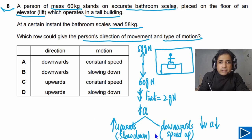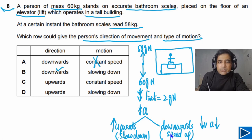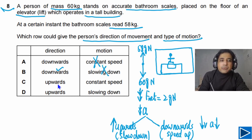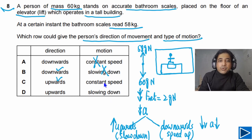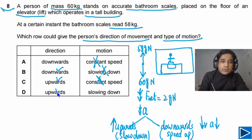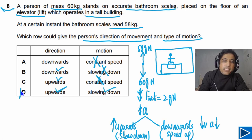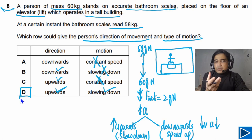Looking at the given options: if moving downwards it must speed up, so those options are not possible. If moving upwards it must slow down — and that matches one option. So the answer for this question is D. This is a beautiful way to approach this problem.